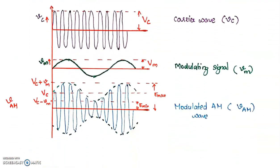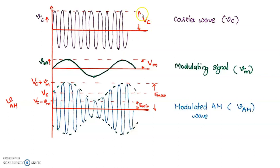Moving on to the waveform, the first represents the carrier waveform, which is of high frequency nature, represented by small VC and its amplitude is capital VC. The second represents the modulating signal or message signal, represented by small VM and its amplitude is capital VM.